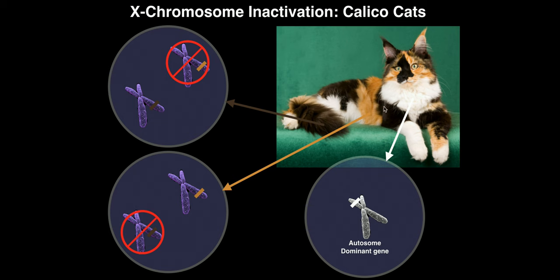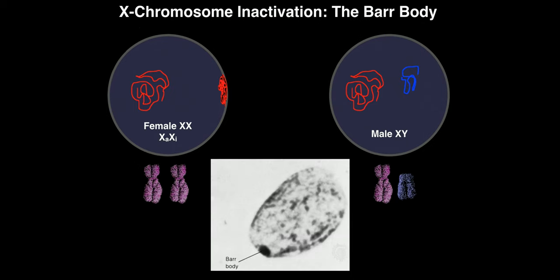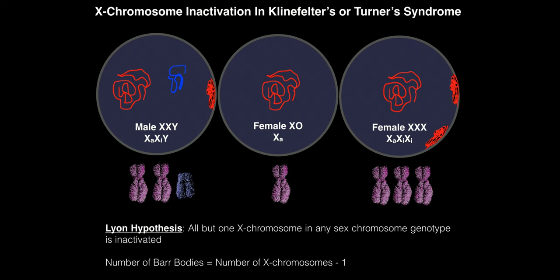That's ultimately what leads to the color pattern in calico cats: random inactivation of X chromosomes producing random bar bodies, and therefore a random arrangement of orange and brown, plus the dominant white autosomal gene. Every calico cat has a different arrangement of colors, and even cloned calico cats show different patterns — confirming that X chromosome inactivation is truly random. Please make sure to like this video and subscribe to the channel for future videos and notifications.